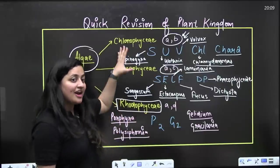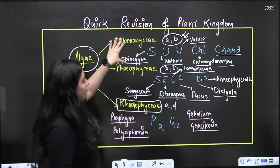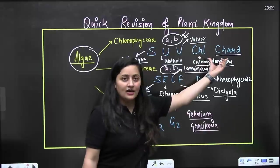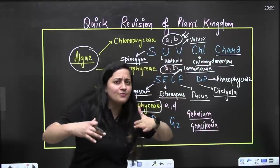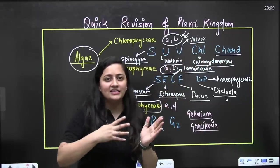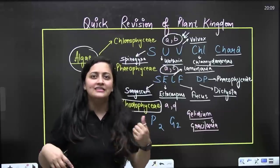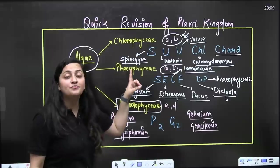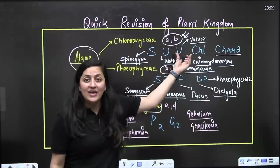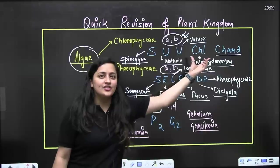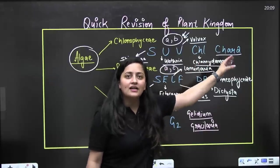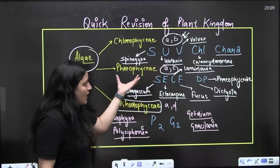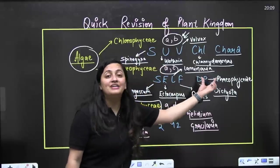Now for the tricks to revise green algae: the trick is 'SUV CHL CARA.' S stands for Spirogyra, U stands for Ulothrix, V stands for Volvox, CHL stands for Chlamydomonas, and CARA stands for Chara — a very important example of green algae.